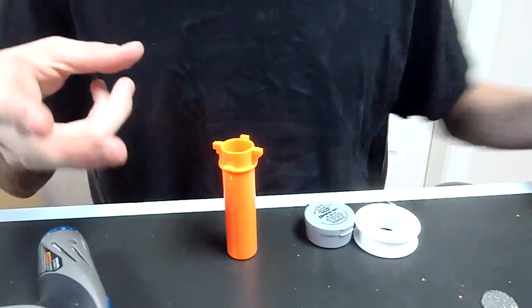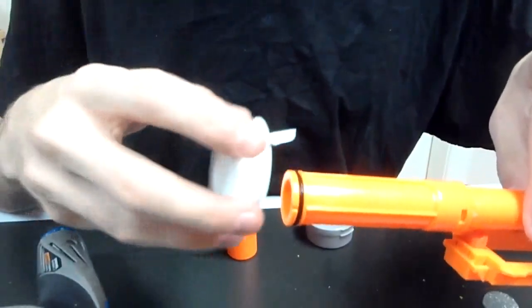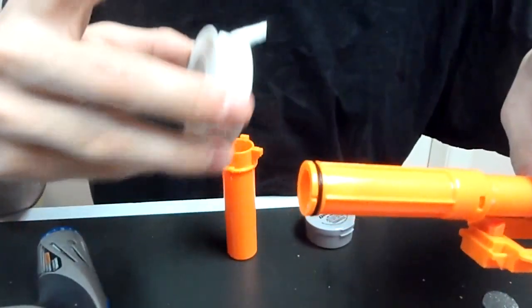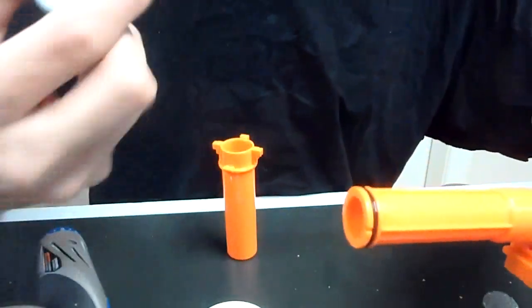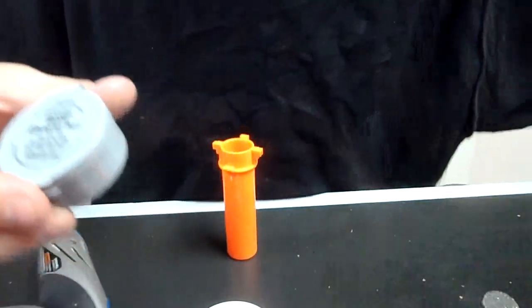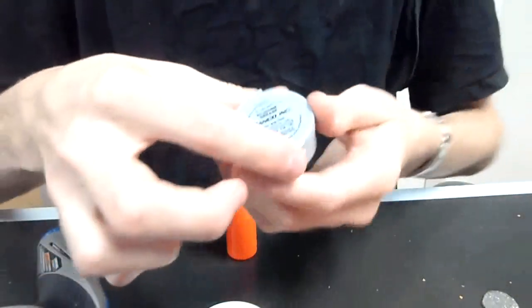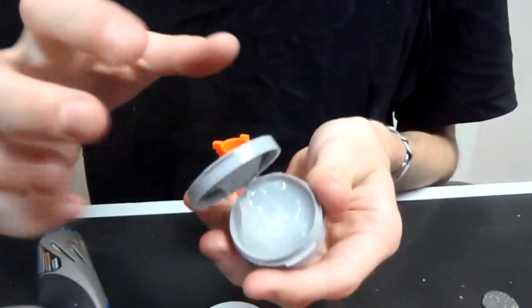The other thing that you really need to do is use Teflon tape to loop underneath the O-ring to increase the seal, as well as take some sort of lubricant, either lithium grease, which looks like this, or silicon grease, which is a thicker grease, and re-grease everything.